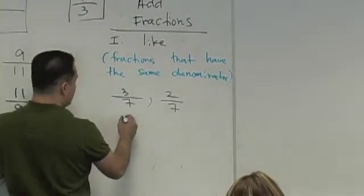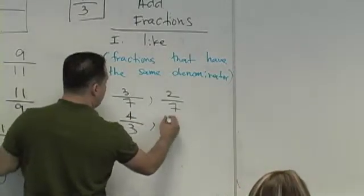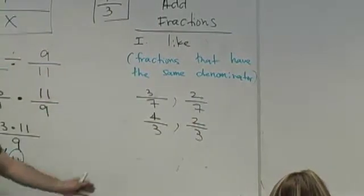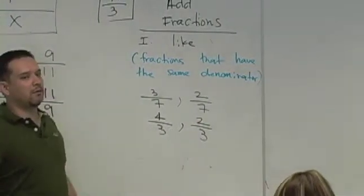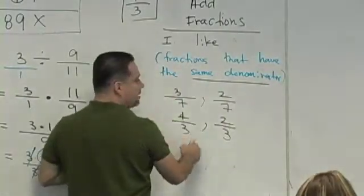Tell me if you agree with this. What about four over three and two over three? Are those like fractions? How do you know? They have the same denominator. The denominator is the number on the bottom. It has to be the same.